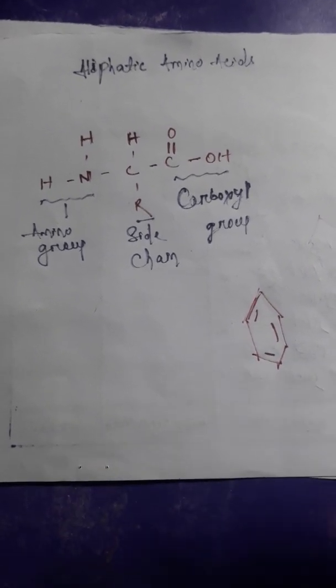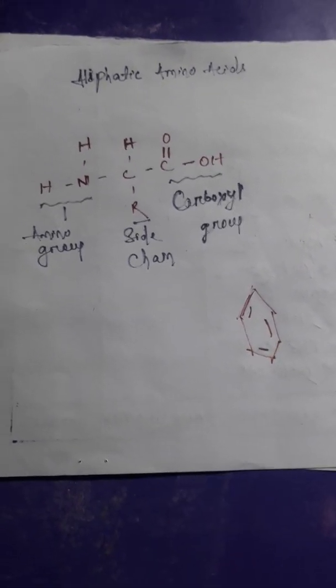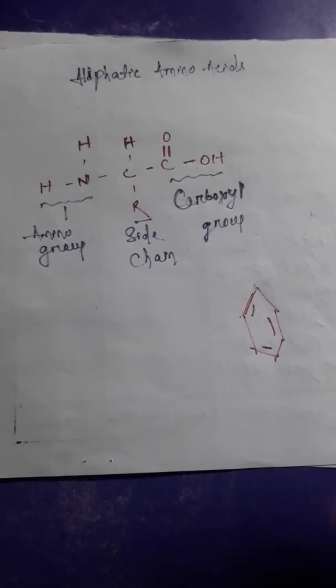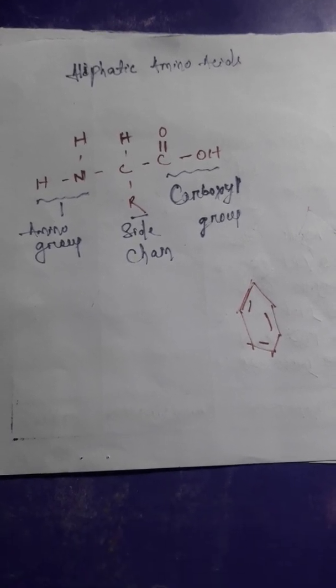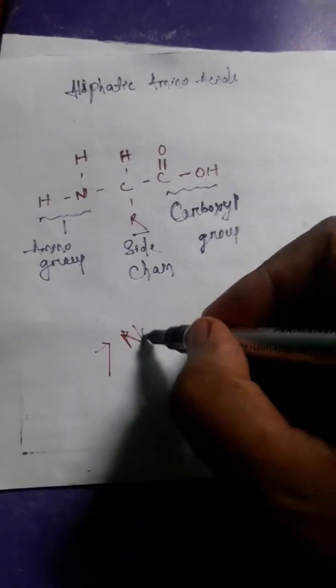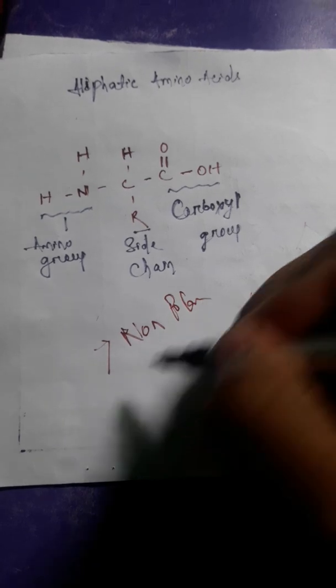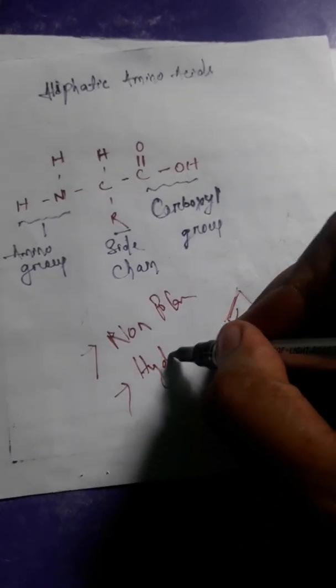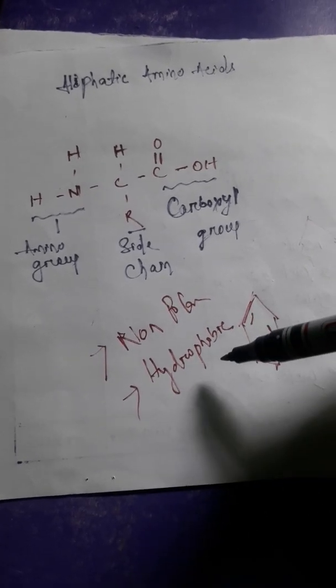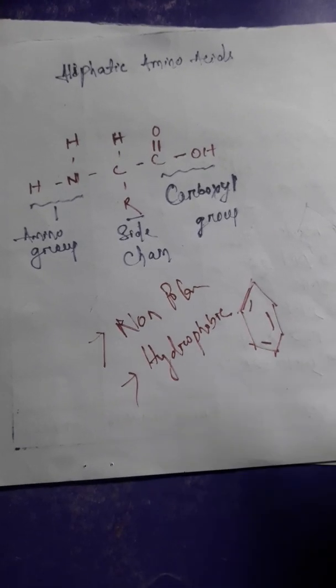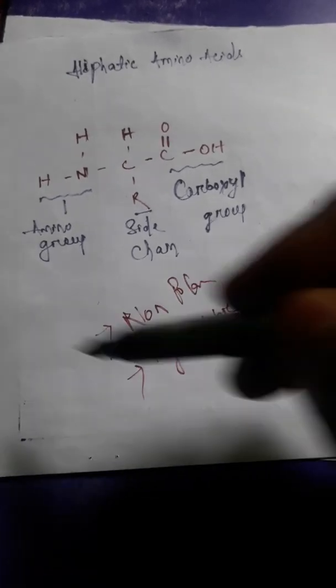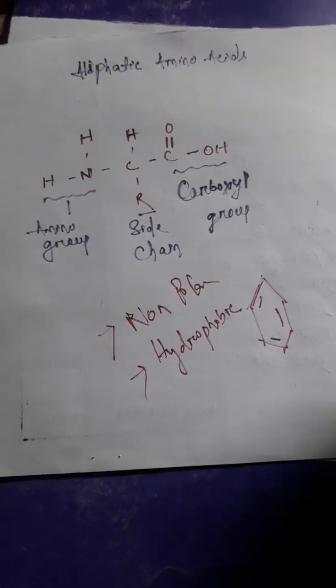As a basic property, you can see aliphatic amino acids don't burn with flame or they don't give you smoke after burning. Aliphatic amino acids are mostly non-polar and hydrophobic. That means they don't easily get mixed with water, and non-polar means they don't give you polar charges.